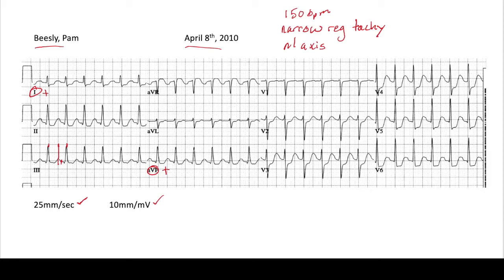After we look at the intervals, we then look for ischemia. Going from left to right, top to bottom, we start with lead one. Drawing a line, we see there's maybe some ST depressions in one. Going to two, we also see some ST depressions. Three is pretty normal — no Q waves, no T wave inversions, no peaked T waves, no ST elevations or depressions. Moving on to AVR, we do see some ST elevations. We mentioned in our prior lecture that ST elevations in AVR are a little bit tricky, and we'll talk about that shortly. AVL — no significant ischemic changes. AVF — we see some ST depressions again.